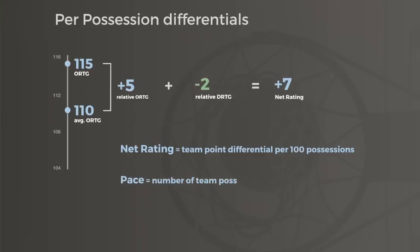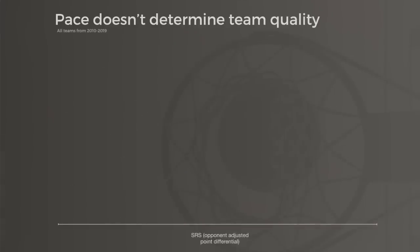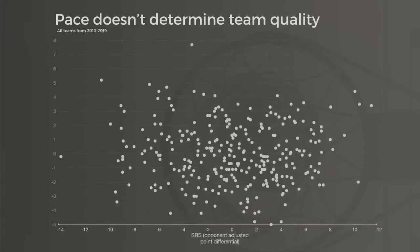The number of possessions a team racks up in a standard game is known as pace, which has zero correlation with how good a team is. The best teams play slow and fast, and the worst teams play slow and fast, which is exactly why per-possession efficiencies are so informative.